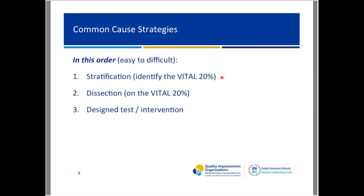The first common cause strategy — which I've already alluded to and will now dig deeper into — is stratification. How do you go from a vague situation to expose the 20% of your process causing 80% of your problem, which allows focus? And once you've focused that, how do you drill further down on this 20%? Once you get more insight, can you come up with some theories which you then test with a designed test or intervention?